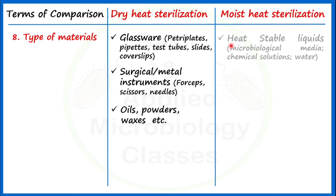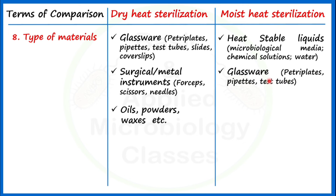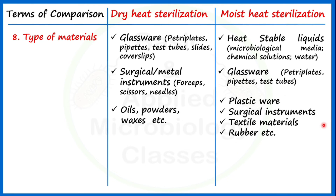For moist heat sterilization, heat-stable liquids can be sterilized — the liquid must be heat stable since moist heat has very high penetration power. Microbiological media, whether broth or agar, liquid or solid, are always sterilized by moist heat in the laboratory. Chemical solutions, vaccines, and water are also sterilized this way. Glassware, plasticware, surgical instruments, textile materials, and rubber can also be sterilized by moist heat sterilization.